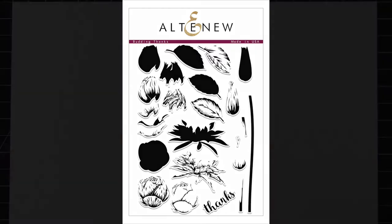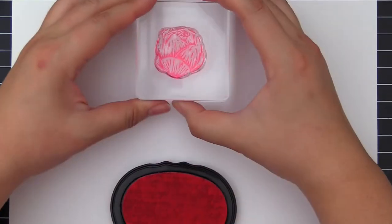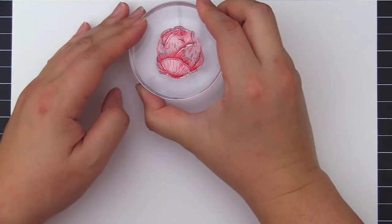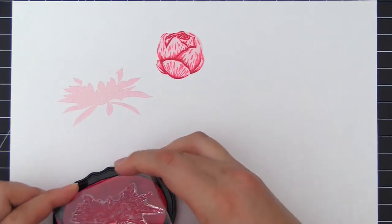This is Budding Thanks stamp set from Altenew. This is a 6x8 stamp set with 23 individual stamps. Stunning and intricately detailed layered flower buds are the highlight of the stamp set.